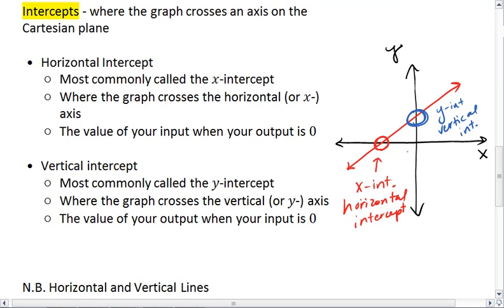Whenever you plug in zero for your input, you should get some value for y for your output, and that is your vertical intercept.